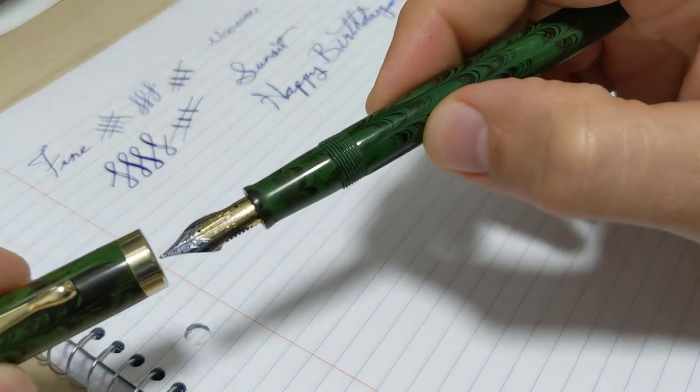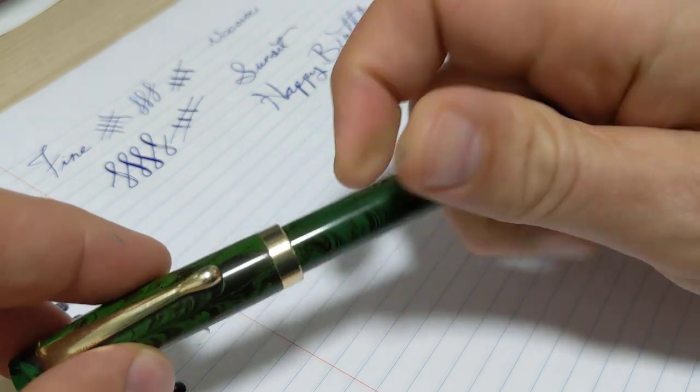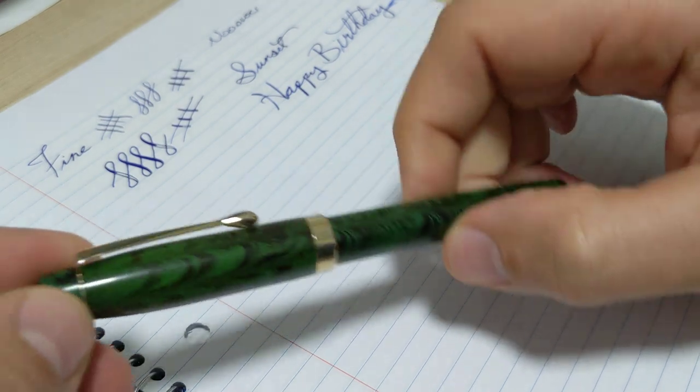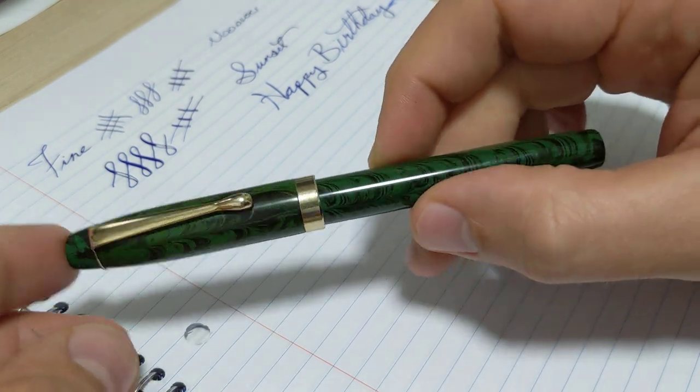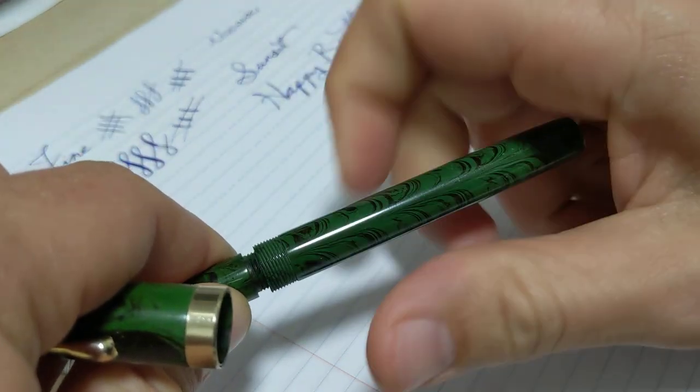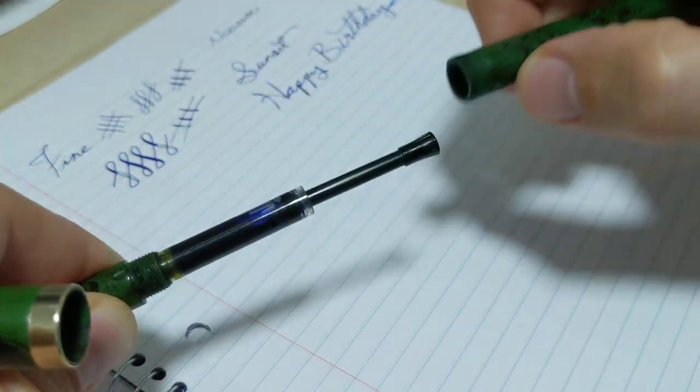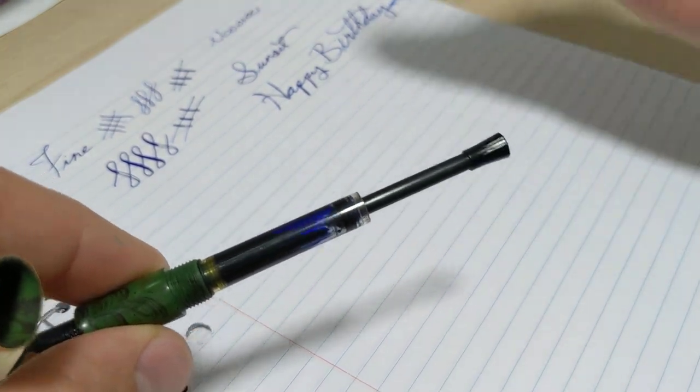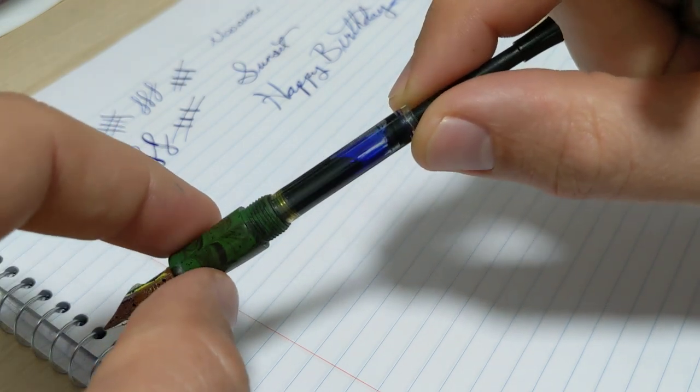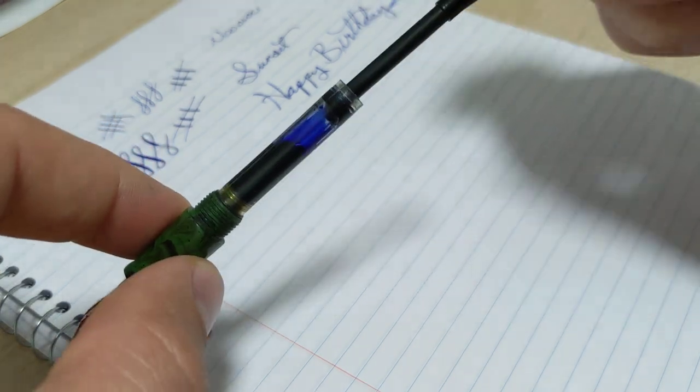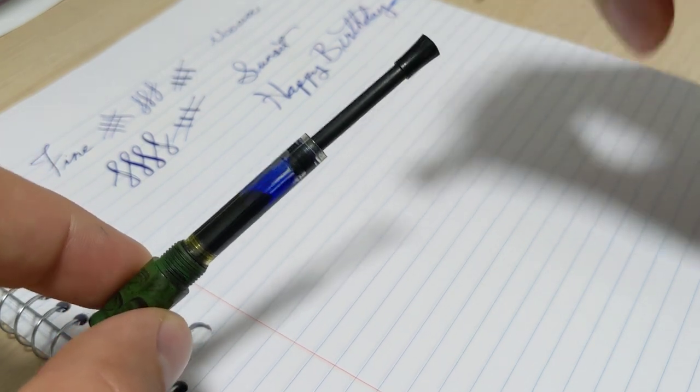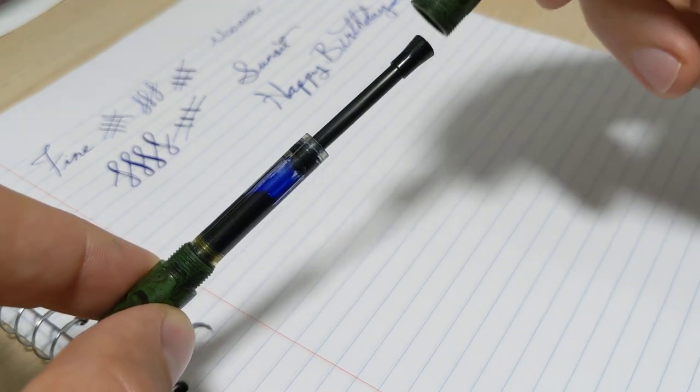Next step up as far as price but a significant step up as far as performance is the Fountain Pen Revolution, this is the Himalaya in ebonite green. This is I believe version one, I think there's a version two where they changed the filling mechanism and apparently the ebonite feed's a little bit longer to help with flow because you'll see this will railroad a little bit. If that's fixed those small issues it's well worth it, I think it's instead of 32 it's 35, go for that. Very similar system as to the Noodlers.